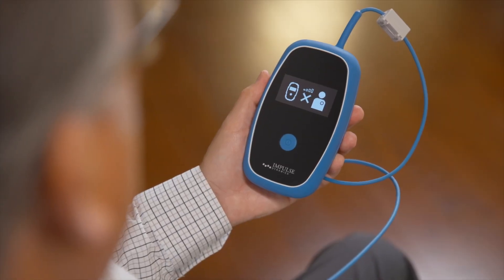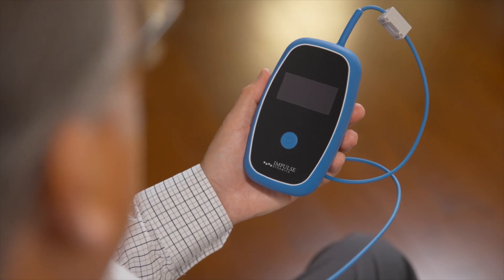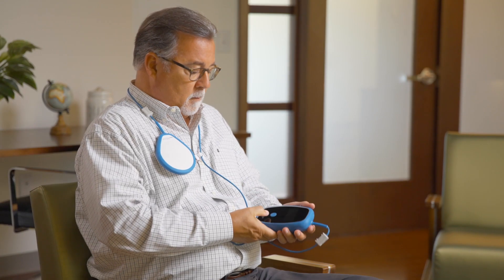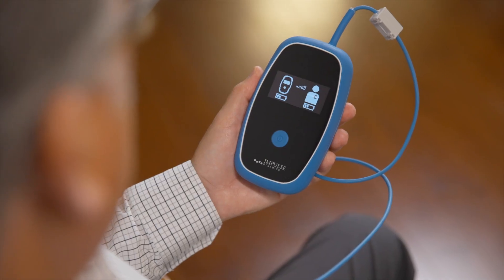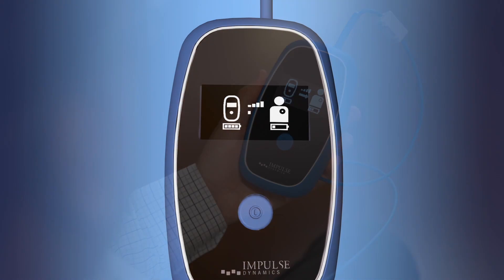However, if the charger powers down, press the power button and start again. When the moving arrow is displayed, your Optimizer has started charging.